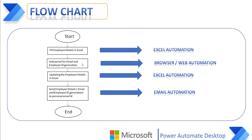All of these are manual tasks. By using RPA — that is Power Automate Desktop — we can automate these tasks from start to end. We will retrieve data from Excel using Excel Automation, fill the details in the web portal for email ID and employee ID generation using browser/web automation, update back the Excel sheet using Excel Automation, and finally send the details to the employee's personal email ID using email automation.